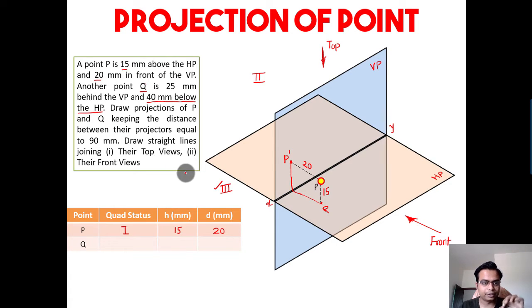Let me fix this up. This is going to be point Q. This is the distance of the point below the horizontal plane. How much is that? 25 mm behind the VP and 40 mm below HP, so this distance is 40 millimeters.